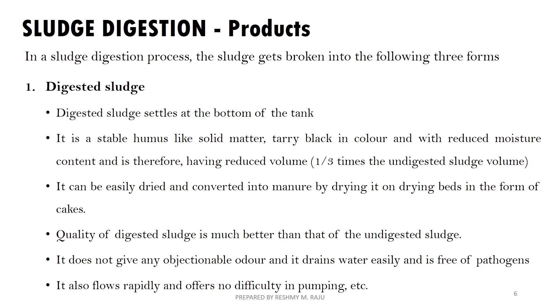Digested sludge is a stable humus-like solid matter, with a cherry-blackened color and with reduced moisture content.